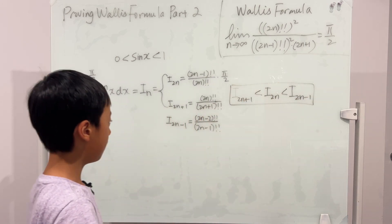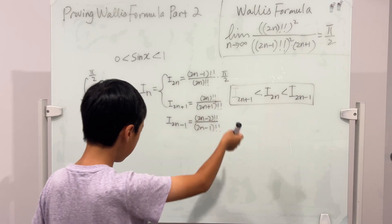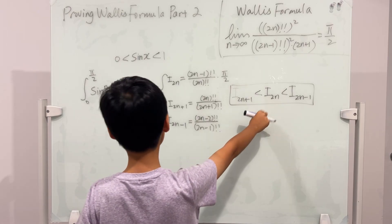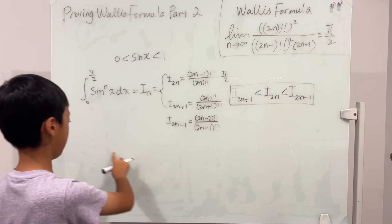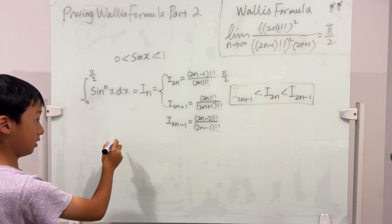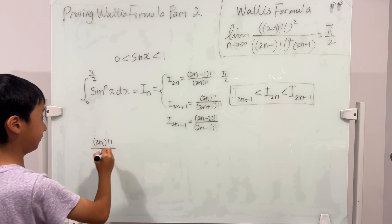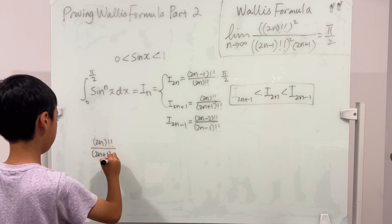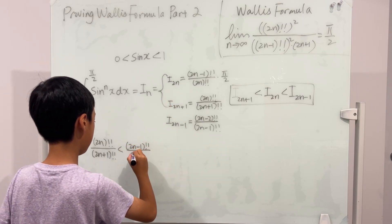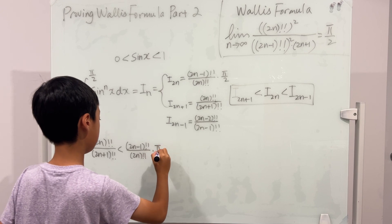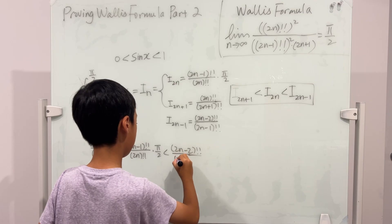We substitute I(2n+1), I(2n), and I(2n−1) into this inequality. It becomes: (2n)!! / (2n+1)!! < [(2n−1)!! / (2n)!!] · (π/2) < (2n−2)!! / (2n−1)!!.